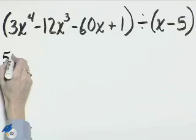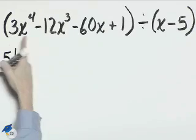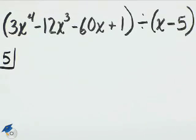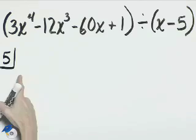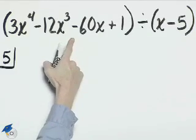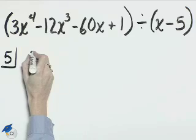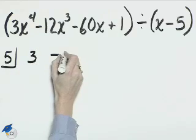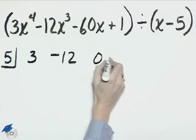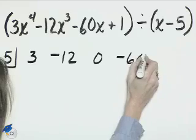The divisor will be 5, and we'll use the coefficients of this polynomial for the other part of the synthetic division. Remember to put a 0 in place of the x squared term to hold its spot. 3, negative 12, 0, negative 60, and 1.